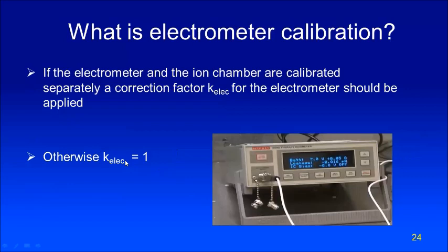The second influence quantity factor is the electrometer calibration factor. As explained earlier, this is needed only if the electrometer is calibrated separately. Otherwise the electrometer calibration factor will be one, because most often we do the electrometer calibration along with the ion chamber.